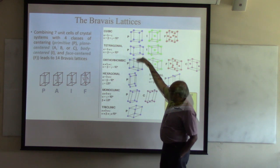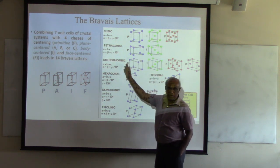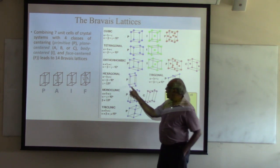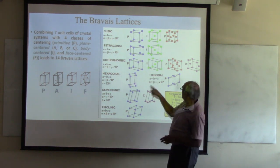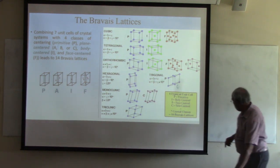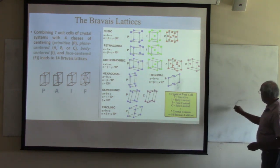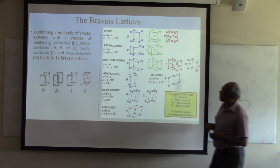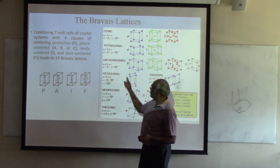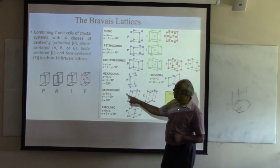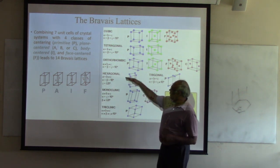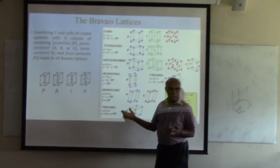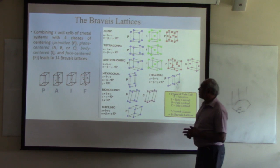Orthorhombic still has alpha, beta, gamma all at 90 degrees. Then it gets a little less symmetric — in this case, one angle becomes 120 degrees. If you look at the rhombohedral structure from the bottom, you see 120 degrees, but A, B is different from C.